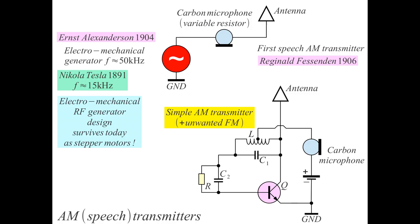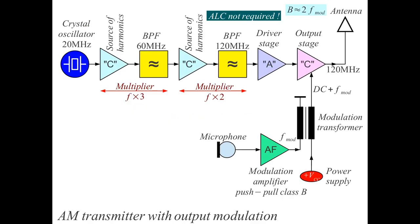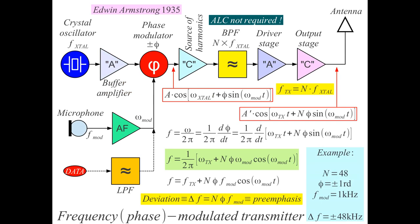A solution that was not so straightforward was frequency modulation, or phase modulation. If we use a sinusoidal modulation signal, then frequency modulation and phase modulation are equivalent. In fact, in a well-performing frequency modulated transmitter, we are actually using phase modulation. Armstrong was doing this in 1935 using a coil with a saturated core.